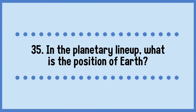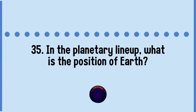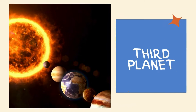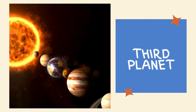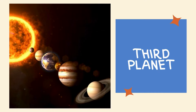In the planetary lineup, what is the position of Earth? Earth is the third planet in the planetary lineup.